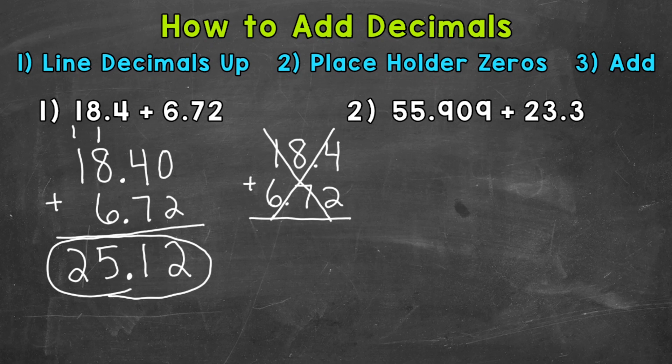Let's try another example and move on to number 2, where we have 55 and 909 thousandths plus 23 and 3 tenths. So, first step, line up our decimals. So, 55 and 909 thousandths plus 23 and 3 tenths.